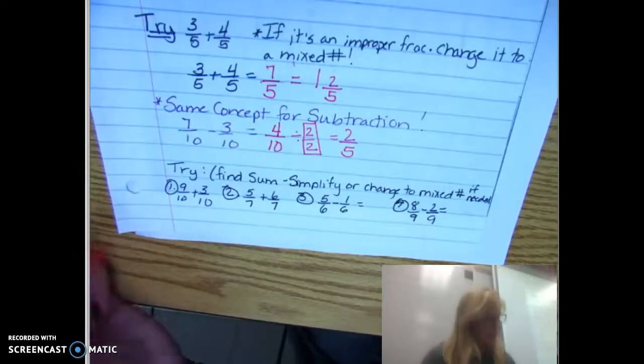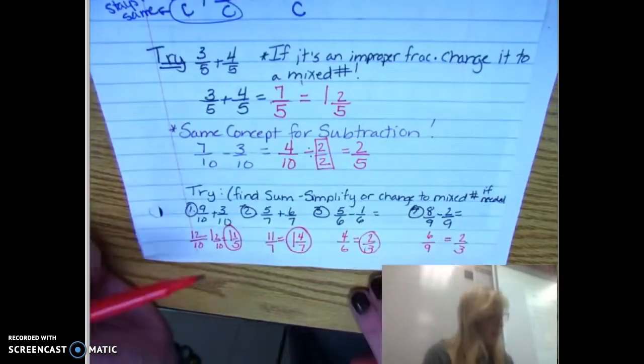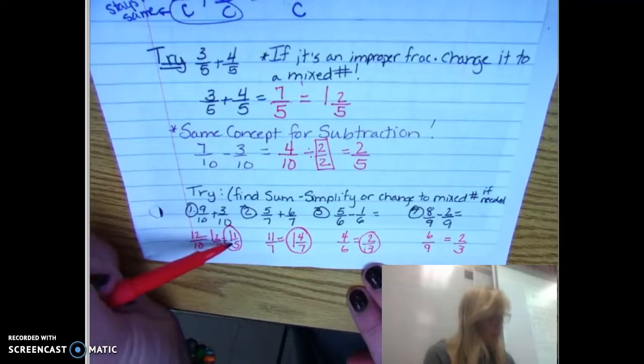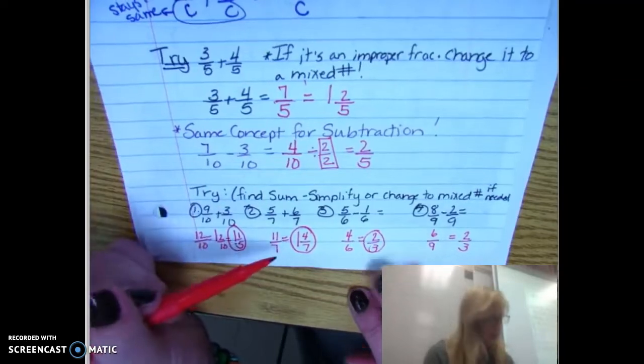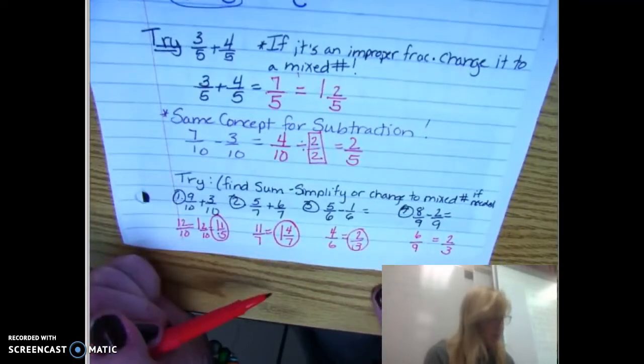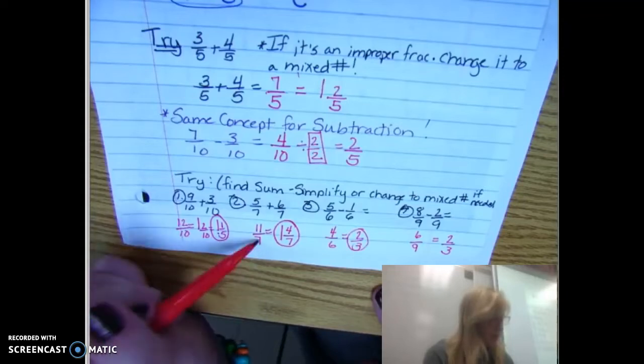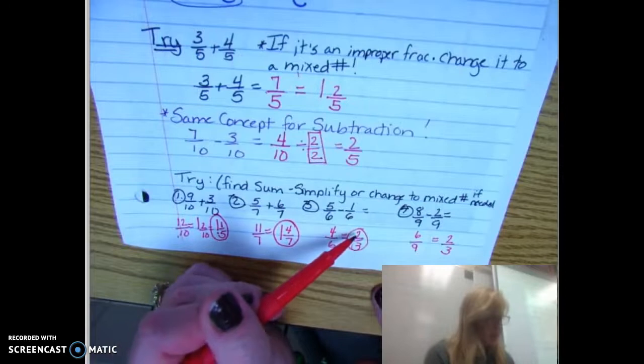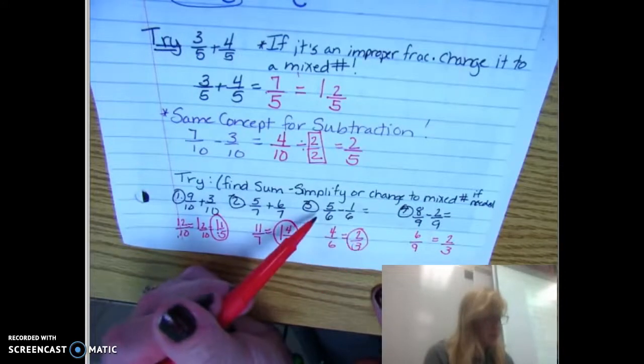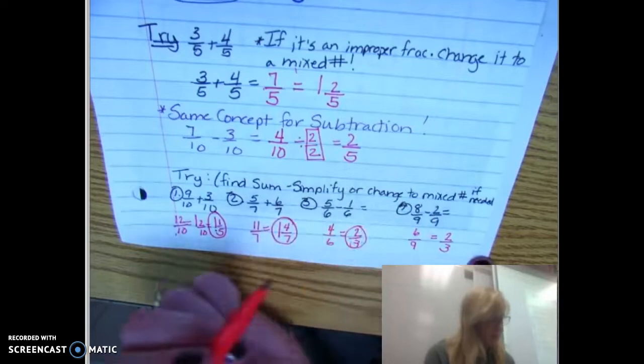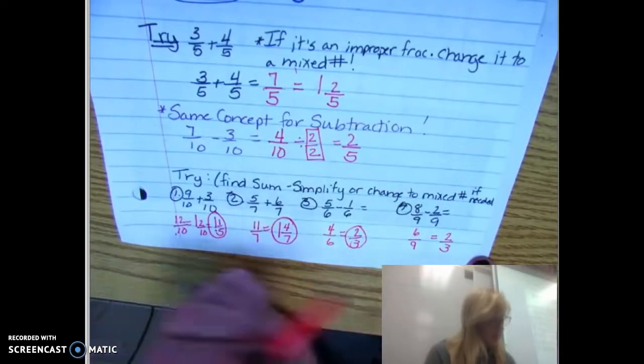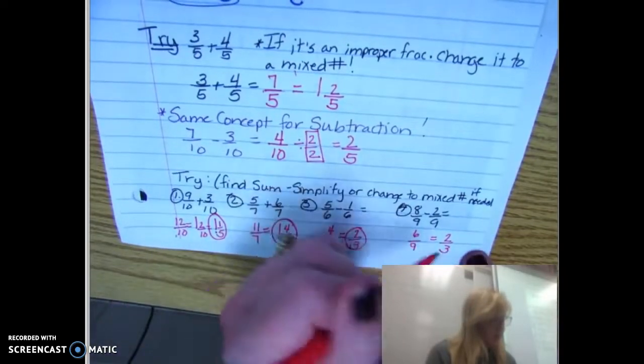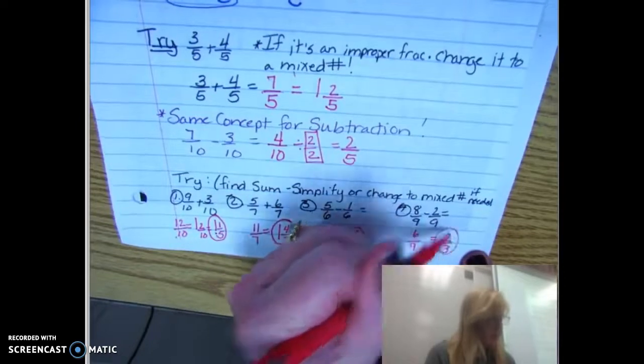I'll put my work right below. So for the common denominator, for number one, I got one and one fifth. For number two, I got one and four sevenths. Again, I put the original fraction right here. I got four sixths, which reduced to two thirds for number three. And then I also got two thirds for number four.